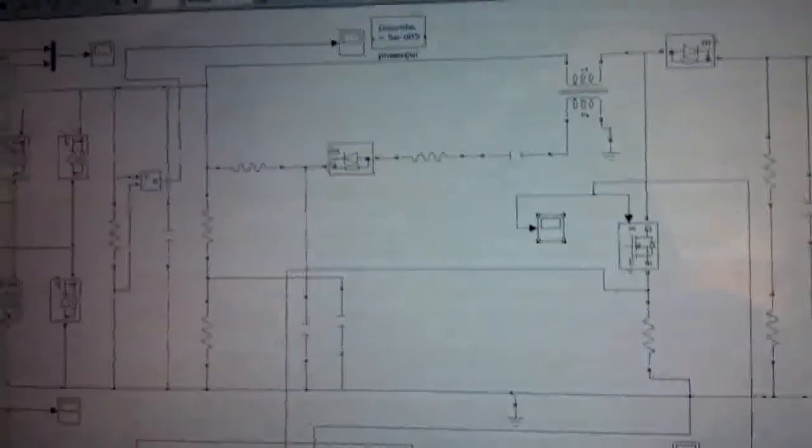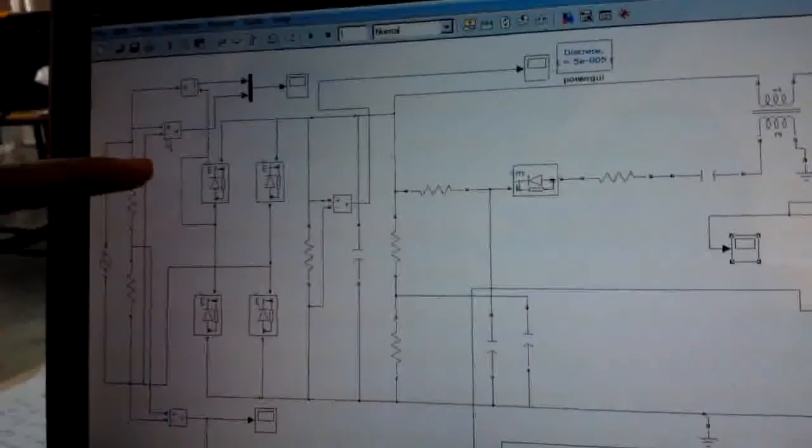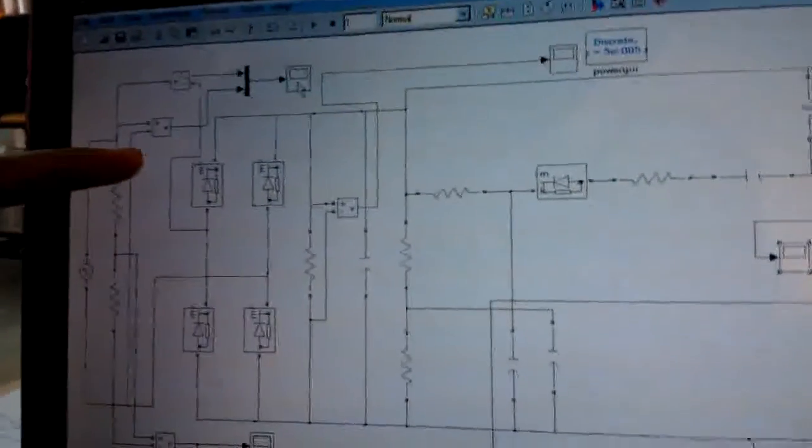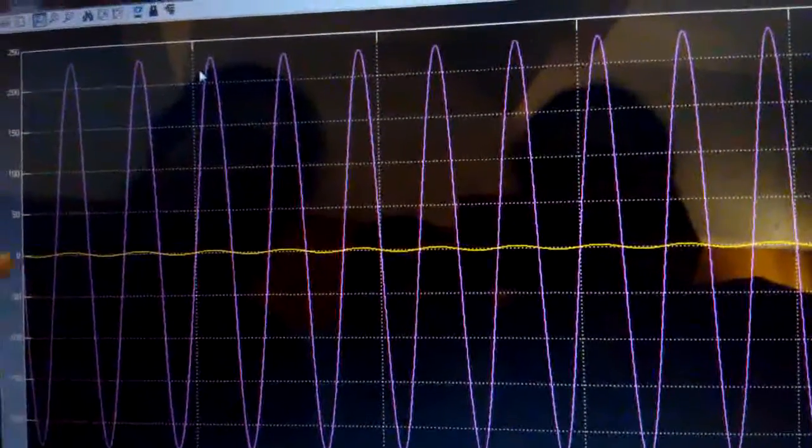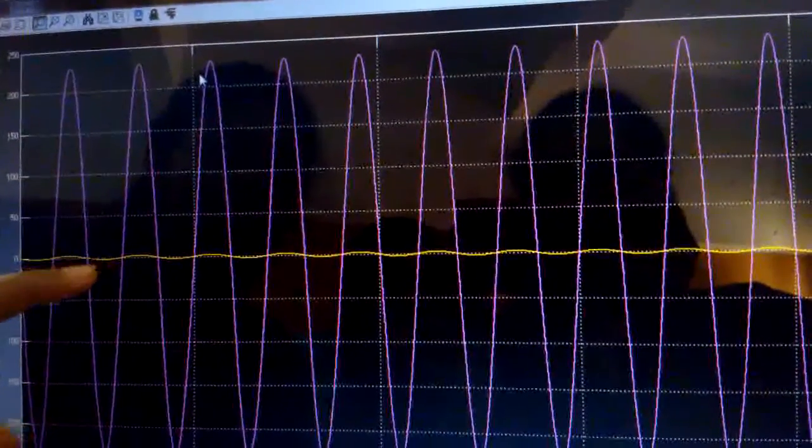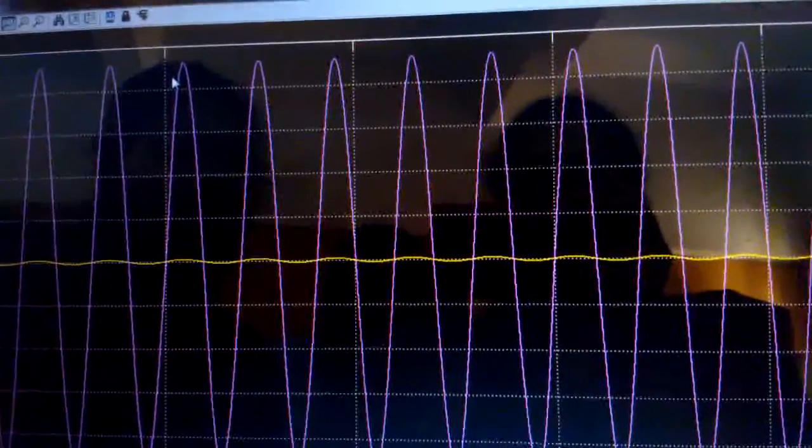Now, we can see the input current and voltage waveforms in this scope. Here, this is our output voltage and this is our current waveform, which are almost in phase with each other.